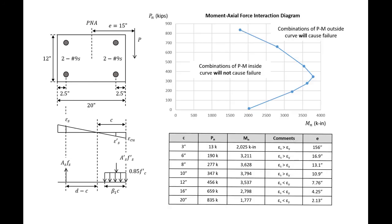If we were to repeat this exercise for several different values of c, we could start developing a plot where we plot our axial load versus our moment — called a moment-axial force interaction diagram. These interaction diagrams are how we can represent the capacity of a certain column section, and the curve we develop is our capacity curve.